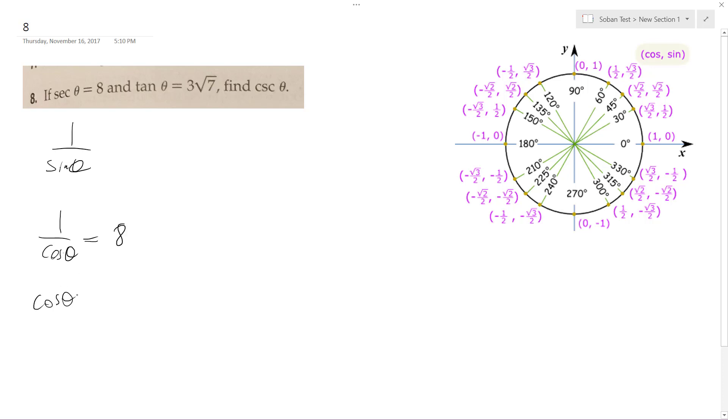So that means that cosine theta is equal to 1 over 8. If tangent theta is equal to 3 root 7,